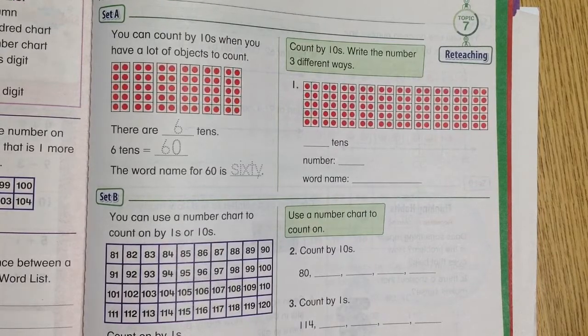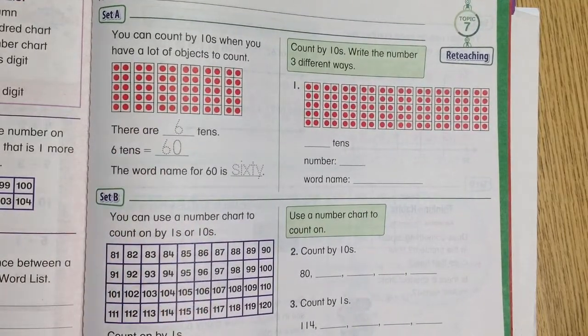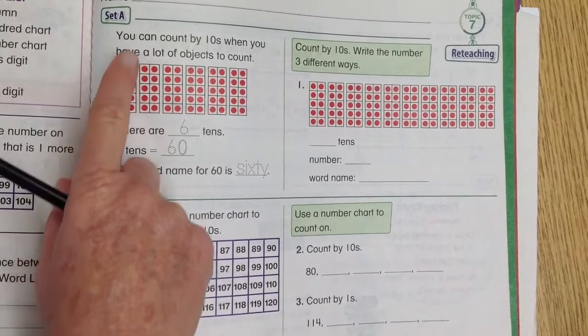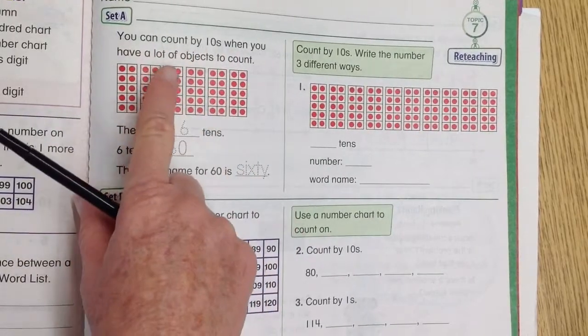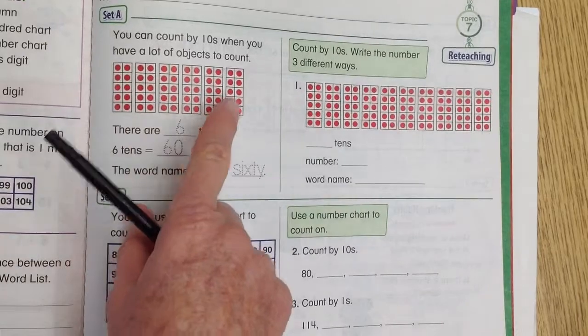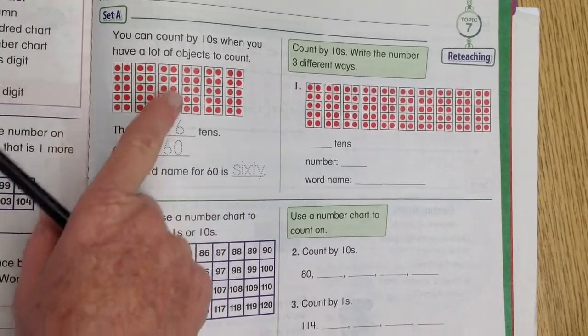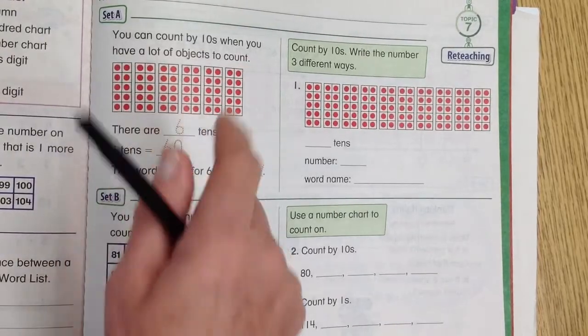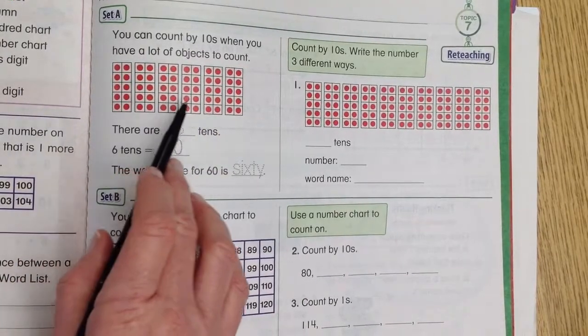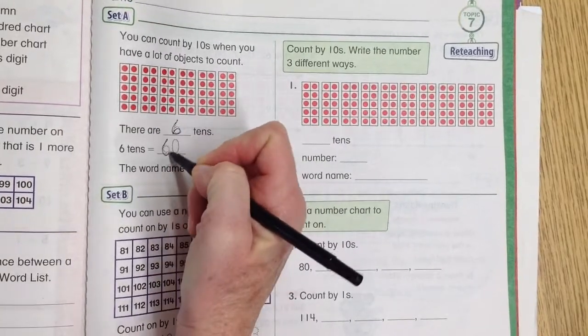All right, so on page 439, set A is talking about counting by tens using these ten frames. It says you can count by tens when you have a lot of objects to count. So instead of trying to count every red dot, we can say 10, 20, 30, 40, 50, 60. There are 1, 2, 3, 4, 5, 6 tens, which equals 60.